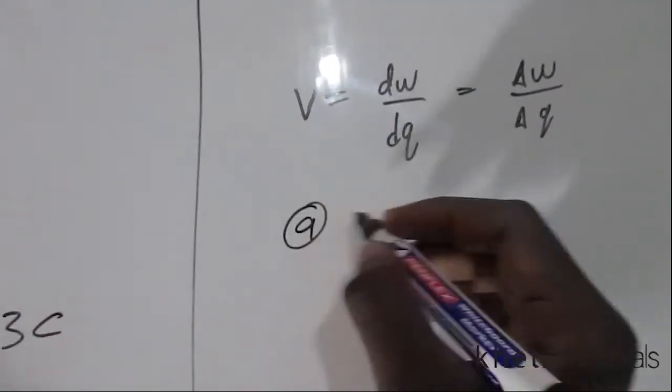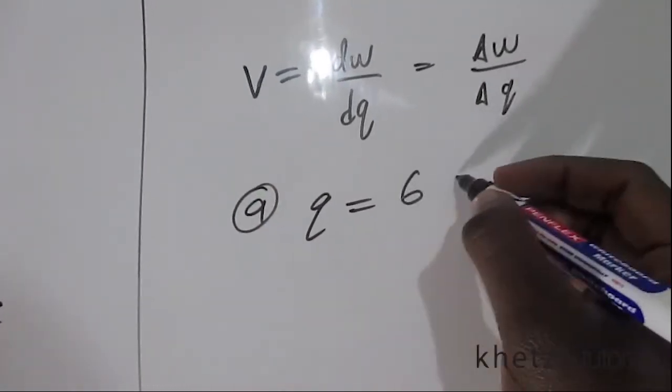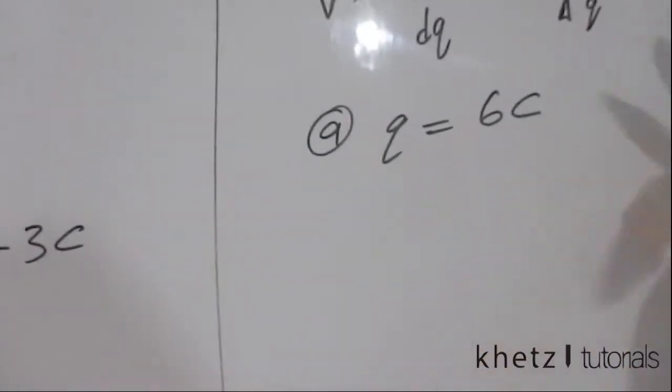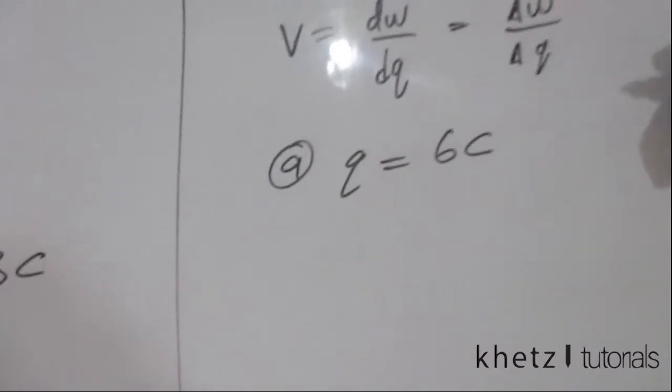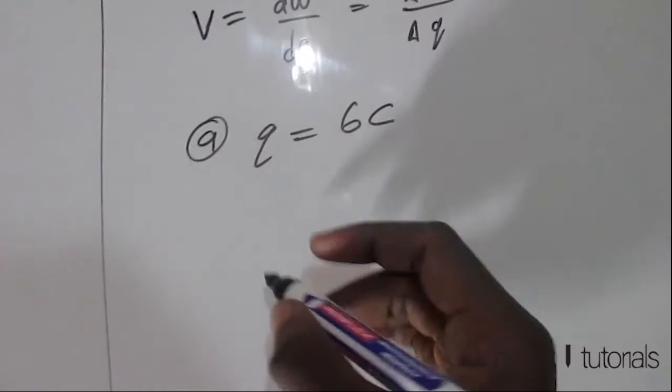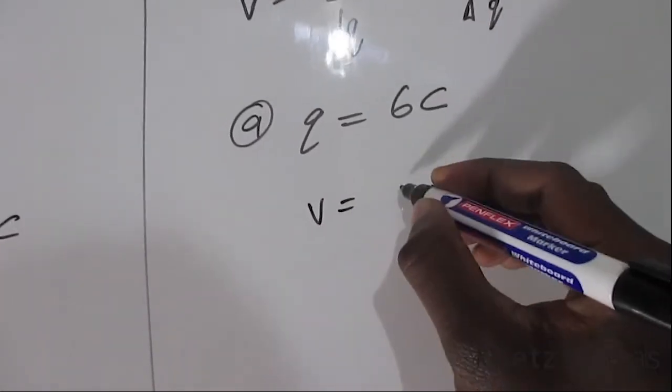So in part a, we're given the charge as 6 coulombs and given the energy. So just basically substituting into the formula, this formula.